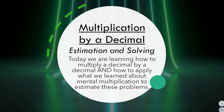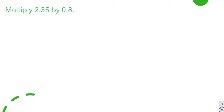Then when you click play, you'll see me go over it with you and you can check your work. Okay, let's get started. We're going to learn to multiply 2 and 35 hundredths times 8 tenths — multiplying a decimal by a decimal.